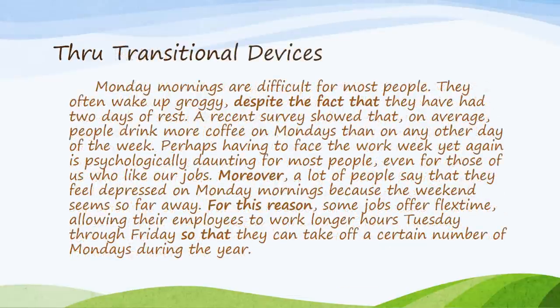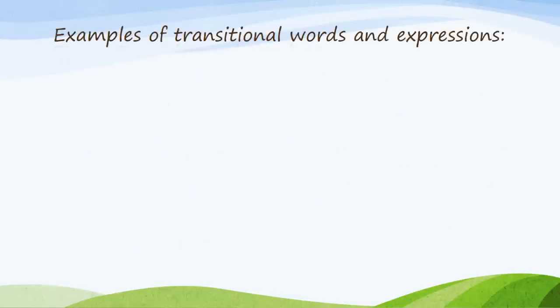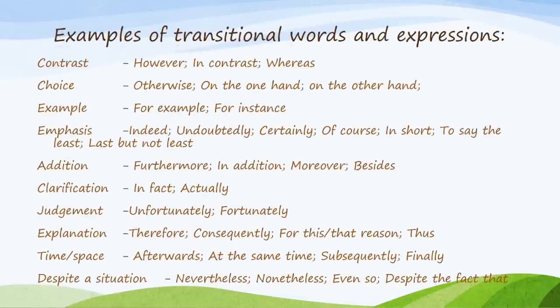Another way to achieve coherence is through transitional devices — this is where conjunctions come in. You can use expressions like 'despite the fact that,' 'moreover,' 'for this reason,' 'so that,' and so on. Please review the use of conjunctions. There are other examples of transitional words and expressions — this is not an exhaustive list, but consider using them depending on your purpose.